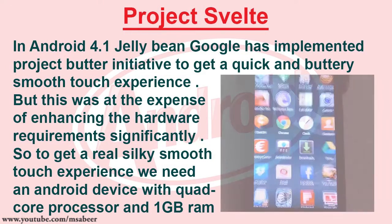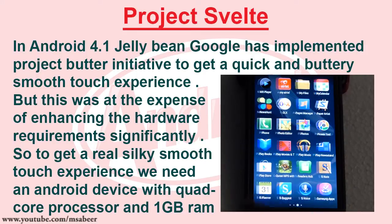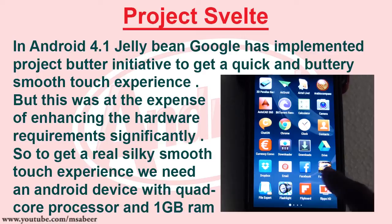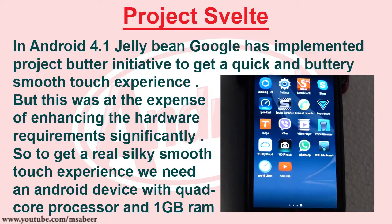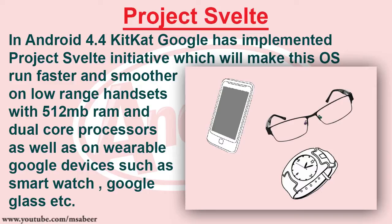In Android 4.1 Jelly Bean, Google implemented Project Butter to achieve a quick and buttery smooth touch experience, but this was at the expense of significantly enhanced hardware requirements. To get a silky smooth touch experience, you needed a device with a quad-core processor and 1 GB RAM. In Android 4.4 KitKat, Google implemented Project Svelte, which makes the OS run faster and smoother on low-range handsets with 512 MB RAM and dual-core processors, as well as on wearable Google devices such as smartwatches and Google Glass.